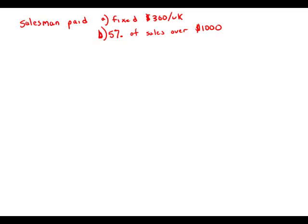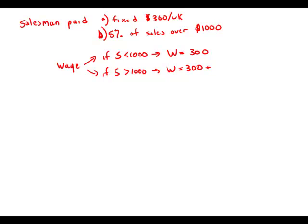Each week, a certain salesman is paid a fixed amount equal to $300 plus a commission equal to 5% of the amount of his sales that week over $1,000. What is the total amount that the salesman was paid last week? His total wages for the week: if the sales are under $1,000, then his wage is $300. If the sales are over $1,000, then the wage is $300 plus a 5% commission — that's 0.05 times (sales minus $1,000).